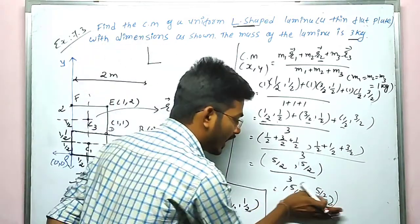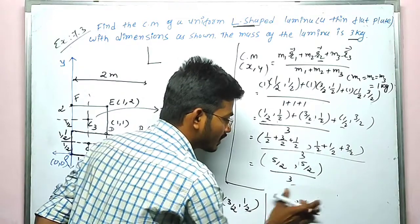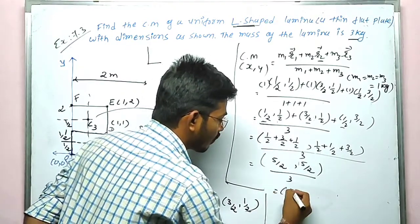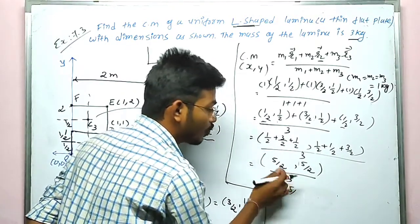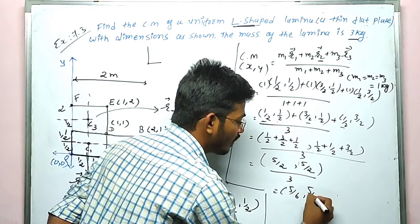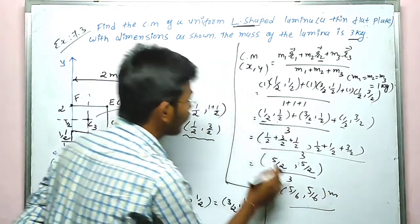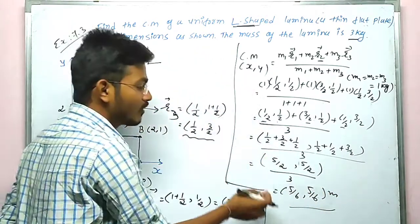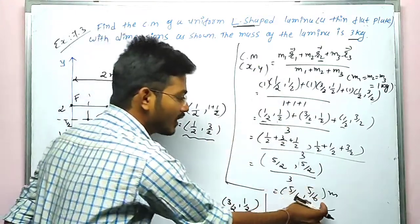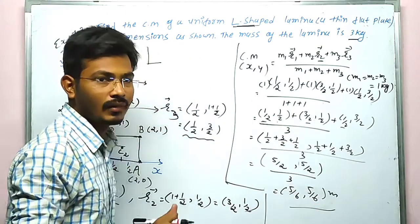Therefore, our final answer is x = 5/6 meter and y = 5/6 meter. The center of mass of the L-shaped lamina is at coordinates (5/6, 5/6) meters.